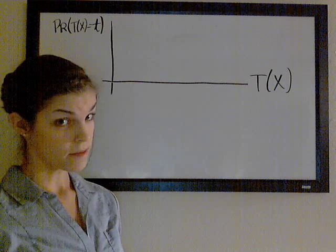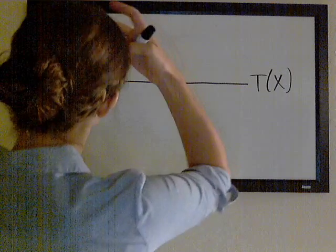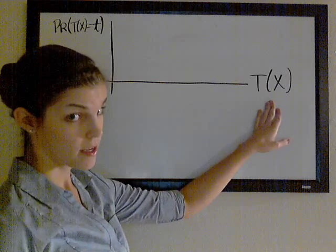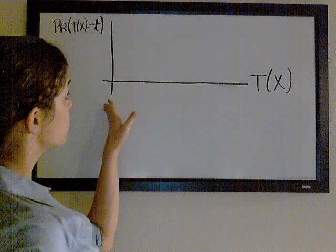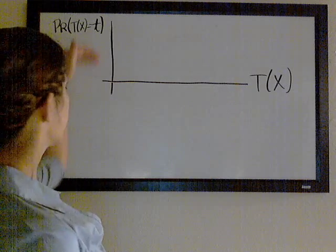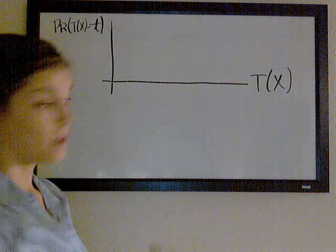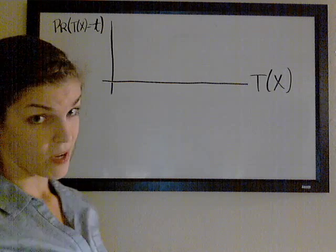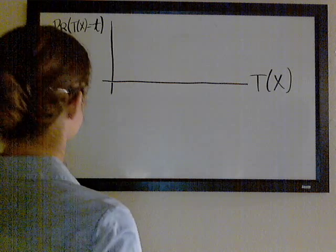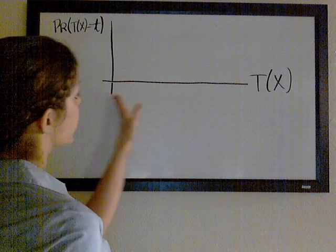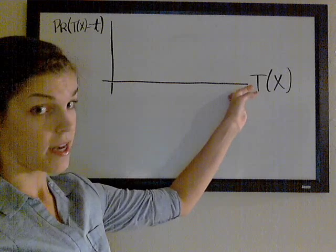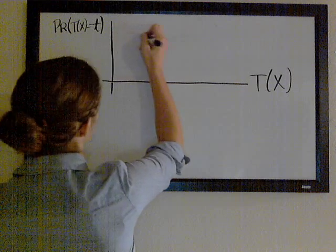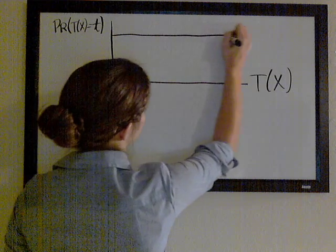Today I'm going to talk about the de Moivre survival distribution. There are different ways that the future lifetime of x, or T(x), can be distributed — different values that it can take on, each with a corresponding probability. Arguably, the easiest way to model this future lifetime is to say that for any value the future lifetime can take on, they all have the same probability. So this is a uniform distribution.